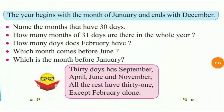The year begins with the month of January and ends with December. January is the first month — साल January महीने से start होता है — and ends with December. December के साथ खत्म होता है, फिर से नया year, new year start होता है.